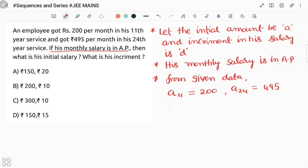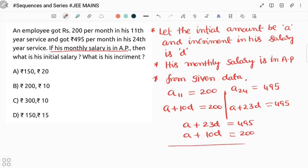What is the meaning? a11 means a plus 10d equals 200. Similarly, a plus 23d equals 495. So you can solve these two simultaneously. Subtract one equation from the other: a plus 23d equals 495, a plus 10d equals 200. This will be cancelled, so 13d equals 295.